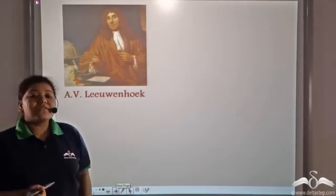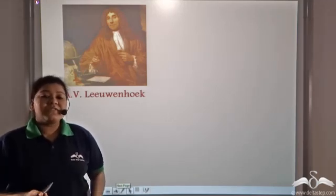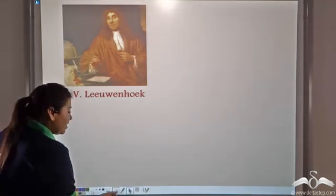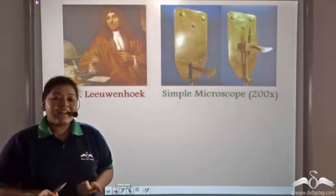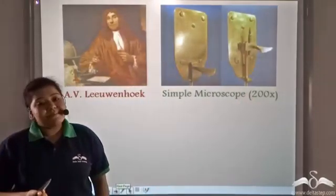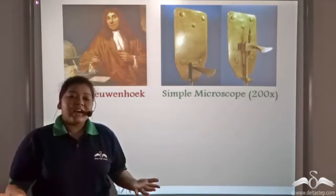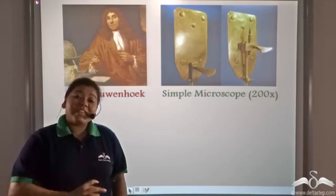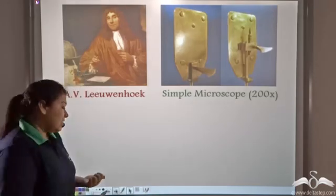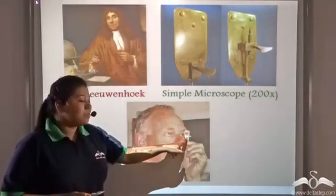Anton van Leeuwenhoek was a simple Dutch tradesman but had one of the most innovative scientific minds. He was working with lenses and he built the first simple microscope that had a magnification power of 200x. That is, the simple microscope could enlarge or magnify an object about 200 times, which is about 10 times more than what the magnifying glass was able to. This is what a simple microscope looks like.